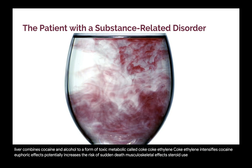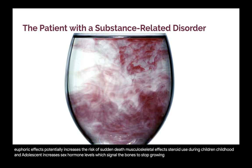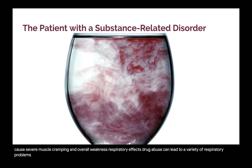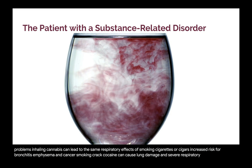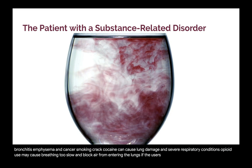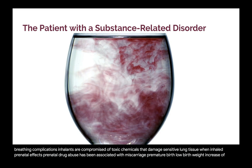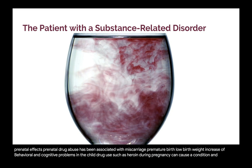Musculoskeletal effects: steroid use during childhood and adolescence increases sex hormone levels, which signal the bones to stop growing, resulting in stunted growth and inability to reach full height potential. Other drugs such as MDMA (molly) or methamphetamine may cause severe muscle cramping and overall weakness. Respiratory effects: drug abuse can lead to a variety of respiratory problems. Inhaling cannabis can lead to the same respiratory effects as smoking cigarettes — increased risk for bronchitis, emphysema, and cancer. Smoking crack cocaine can cause lung damage and severe respiratory conditions. Opioid use may cause breathing to slow and block air from entering the lungs; if the user suffers from asthma, opioids will increase breathing complications. Inhalants are comprised of toxic chemicals that damage sensitive lung tissue. Prenatal effects: prenatal drug abuse has been associated with miscarriage, premature birth, low birth weight, and increased behavioral and cognitive problems in the child. Drug use such as heroin during pregnancy can cause neonatal abstinence syndrome, in which the infant is born dependent on opioids.